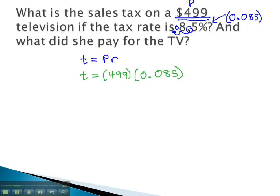And then that simply gives us a multiplication problem. 499 times 0.085, we find out that the tax is equal to 42.415.